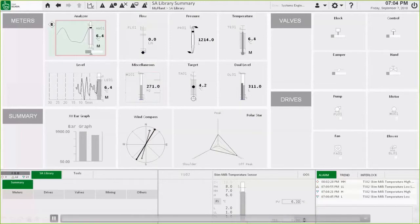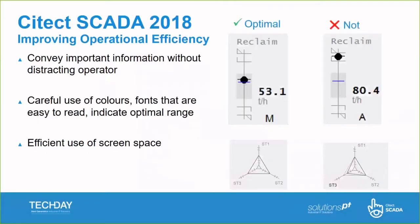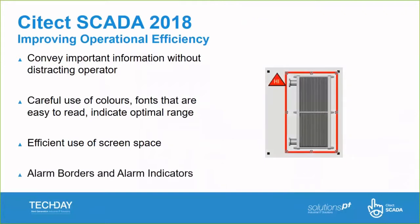In summary, we're conveying important information without distracting the operator. You can clearly see that the reclaim symbol on the left is operationally more efficient than the symbol on the right. Looking at the polar stars, you can see that SD3's PV is pulling much further past the set point. We're obviously very careful with the use of colors so as not to distract the operator. We can also apply this concept to your existing symbols — supplying alarm borders and having indicators on these symbols while still using the context-aware workspace.